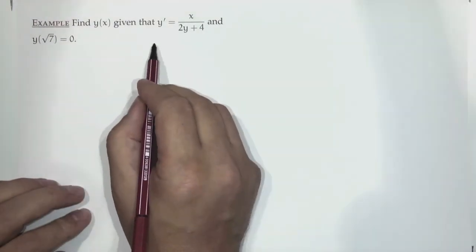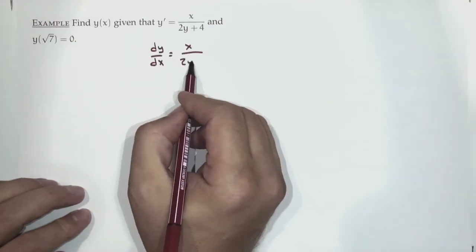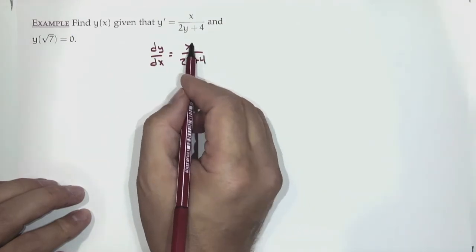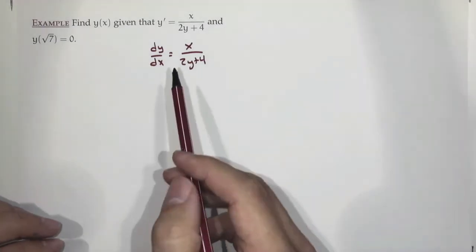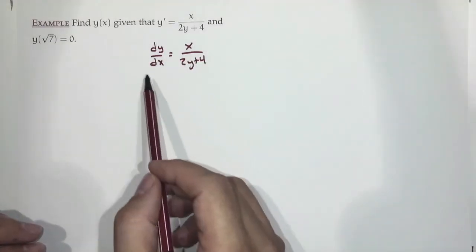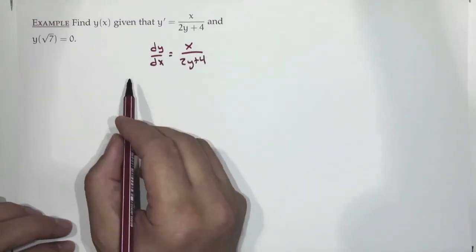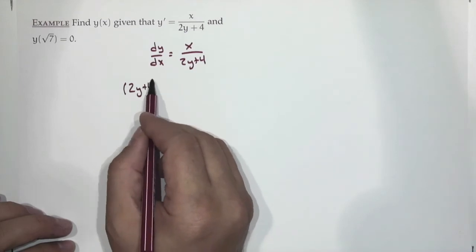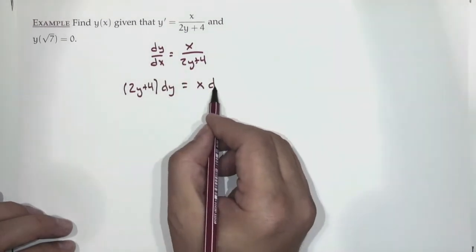The first real step is identifying the type: separable differential equation. To separate, essentially cross-multiply: move the (2y+4) across and the dx across. So (2y+4) dy = x dx.